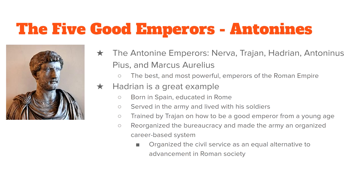The Flavians were replaced by another dynasty called the Antonines, arguably the best emperors that Rome saw: Nerva, Trajan, Hadrian, Antoninus Pius, and Marcus Aurelius. Hadrian, for example, was born in Spain but educated in Rome, showing how the different parts of the empire were coming together. He served in the army and led soldiers, so he knew what they wanted and they were very loyal to him.